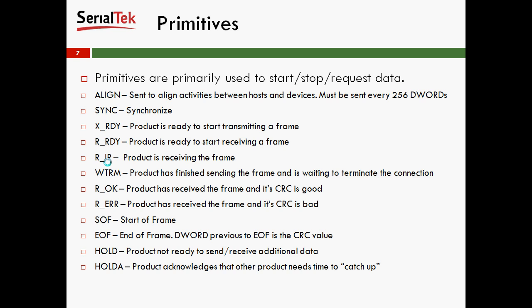RIP means Rx in process — the product is currently receiving the frame. WTRM means waiting to terminate the connection, so we've finished sending the frame and we're waiting for the device to say it's received everything. R-OK means the product has received the frame and its CRC is good. R-Error means the product has received the frame but its CRC is bad. SOF is start of frame, and EOF is end of frame. In a SATA frame, the D-Word previous to the EOF is the CRC value.